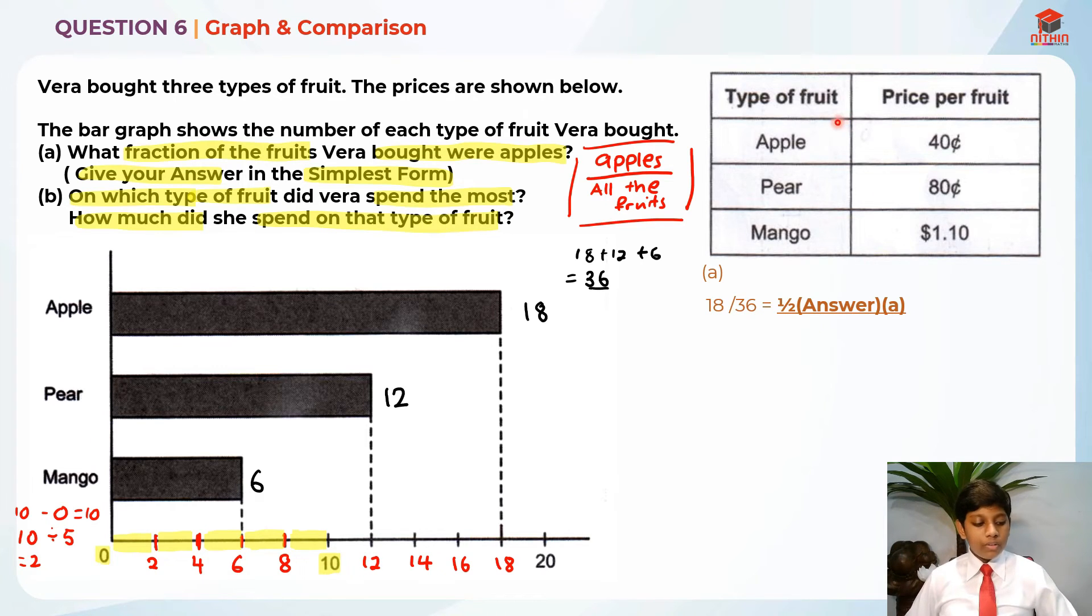We are going to find the price for apple, mango, pear. There's eighteen apples. In order to find the total cost of the apples, we basically take eighteen times forty cents. In order to find the apples, we take eighteen times forty cents. It will give us seven dollars and twenty cents.